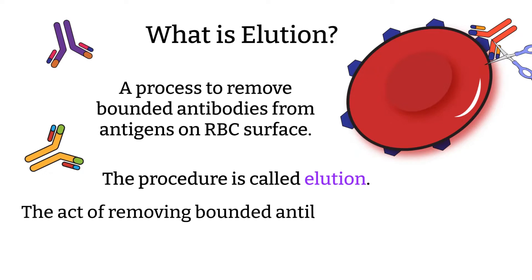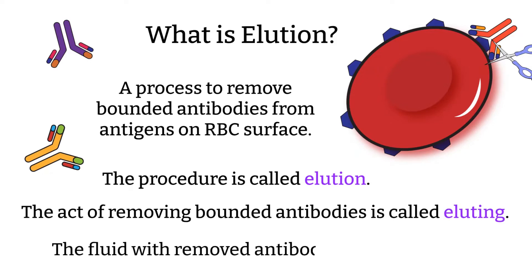The act of removing the bound antibody is called eluting. The fluid that the removed antibody is in is called eluate. Once you have the eluate, you can use it for antibody identifications, just like you would with the patient plasma. And I have a video about antibody identification if you need to review it.